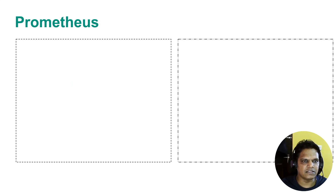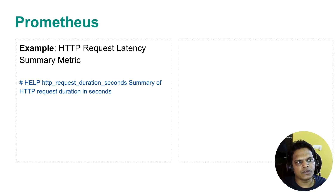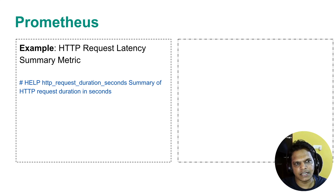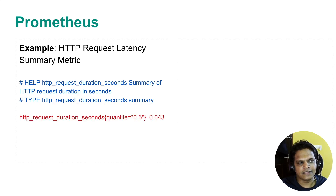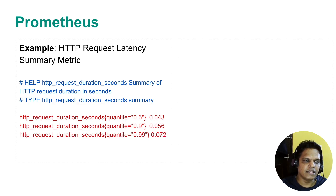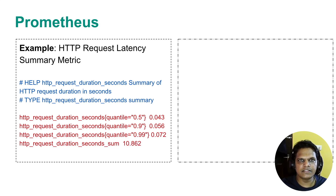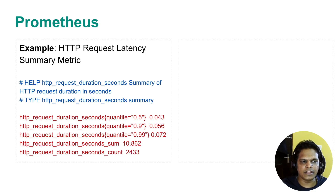Let's understand the summary metric with an example. Suppose you want to calculate the HTTP request latency — what latency you are getting for certain HTTP requests. You are using the base metric HTTP request duration seconds, which tells you the HTTP request duration in seconds, and the metric type is summary. You will get data for quantile 0.5, quantile 0.9, and quantile 0.99, with a sum of 10.8 and a total count of 2433.